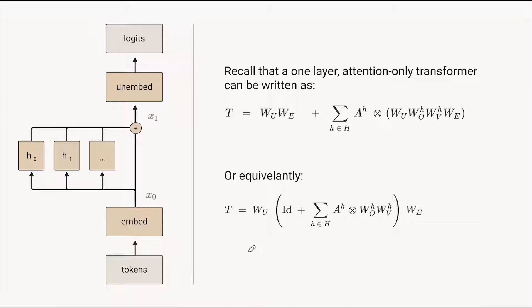And another way that we could write that is in a factored form. We could say the first thing you do is you multiply by WE, the embedding, then we apply the attention heads and there's the identity path as well. And then finally, we do the unembedding.